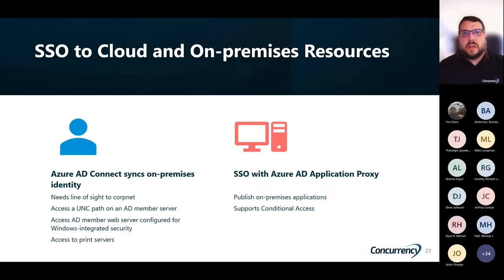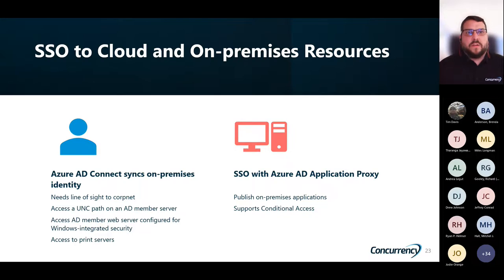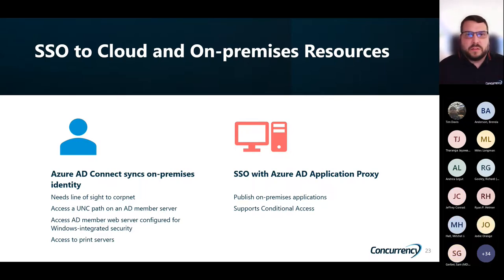When we talk about SSO to cloud and on-prem resources: for on-prem, you still need line of sight to a corpnet, so you may need a VPN. But as long as you have that UNC path or web server, you'd still be able to access those resources via Azure AD Connect sync. If you don't want full line of sight, we can also use single sign-on with Azure AD Application Proxy, which lets us publish on-premises web apps without a DMZ or VPN. It supports SSO by doing authentication at Azure Active Directory when you sign in, and we're able to support multi-factor auth and conditional access policies to make sure data is secured.